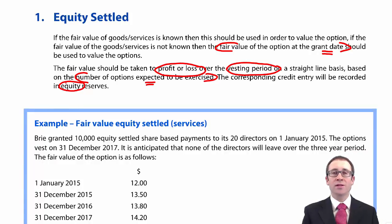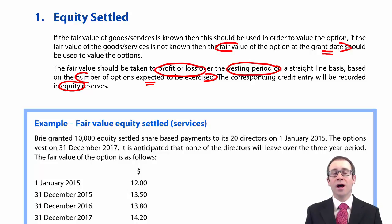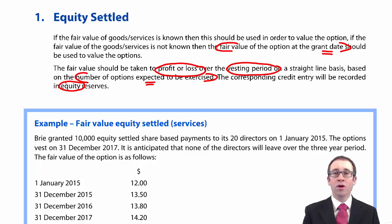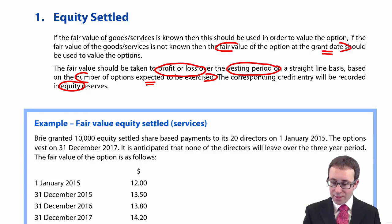So the key bits are: fair value at the grant date, expense it straight line over the vesting period to profit or loss, based upon the number of employees who we expect to exercise the option. We take the corresponding credit entry to equity — most of the time that will be your other components of equity. Let's go through and have a look at an example.